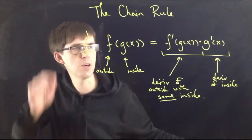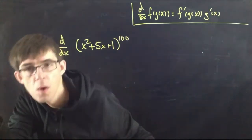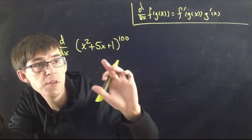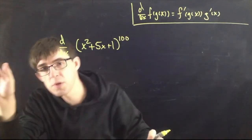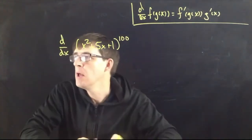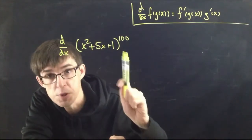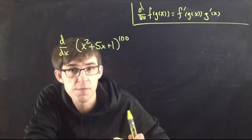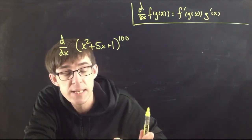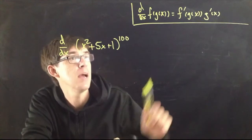How about this one? The derivative of (x² + 5x + 1) to the 100th power. To use the chain rule here, you have to recognize that it is one function plugged inside of another function. The inside is x² + 5x + 1, and the outside is the 100th power.